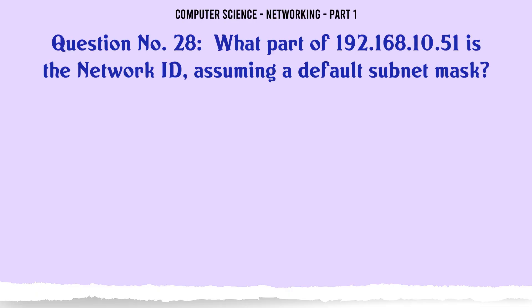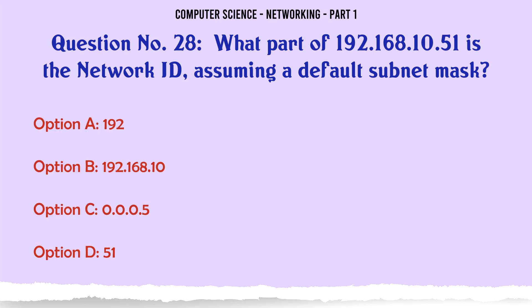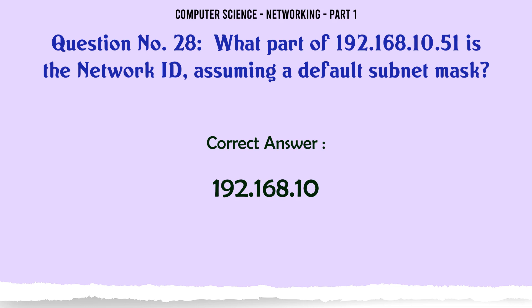What part of 192.168.10.51 is the network ID, assuming a default subnet mask? A. 192. B. 192.168.10. C. 0.0.0.51. D. 51. The correct answer is: 192.168.10.